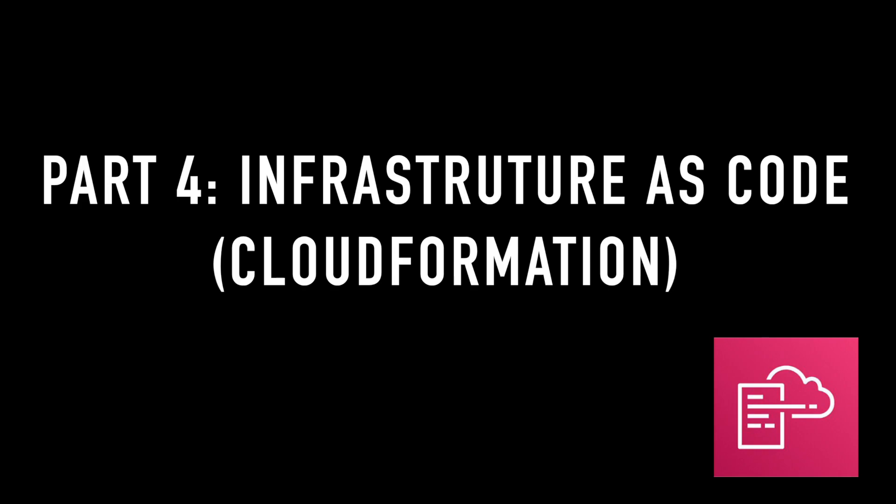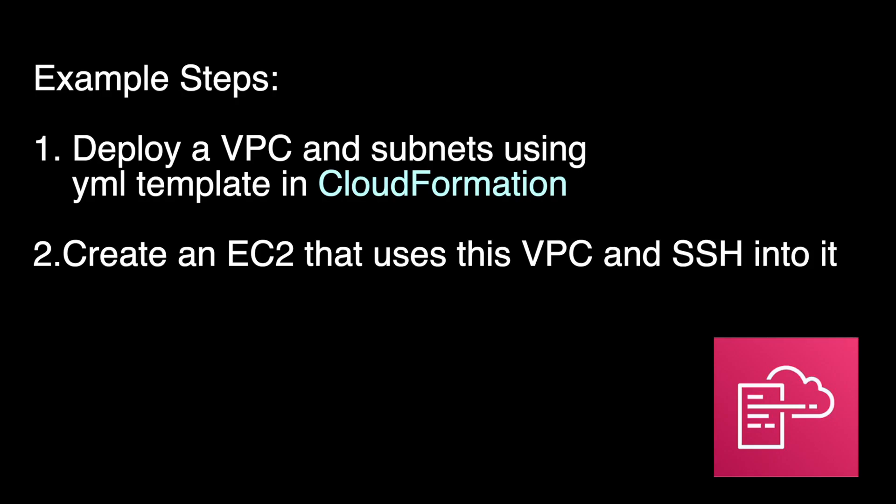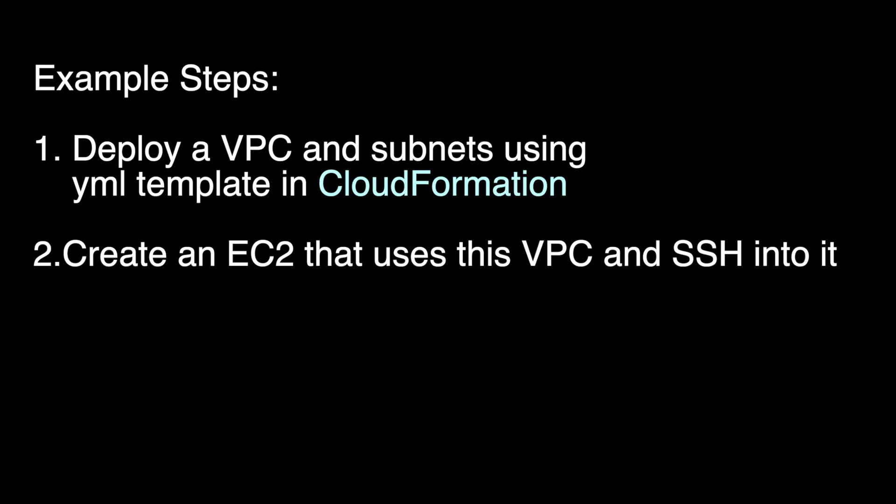Infrastructure as code allows us to define and deploy different infrastructure through code. Similar to how we expect our source code to deliver the same result each time it's run, we can deliver the exact same environment when running infrastructure through code. This allows teams to deploy their infrastructure rapidly and reliably, especially as the project continues to grow. In this example, we'll use a YAML template in CloudFormation to deploy a VPC with two public and two private subnets. We'll then create an EC2 that uses that VPC and SSH into it.